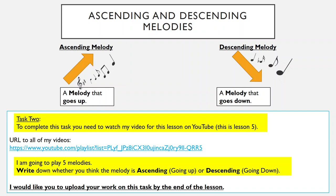For task two, you'll need to be watching this video to listen to it. I'm going to play five melodies and you're going to write down whether you think each one is an ascending or a descending melody. To complete this task you will need to watch this video on YouTube — this is lesson five, I'll put the URL there as well. Write down whether you think each melody is ascending or descending.